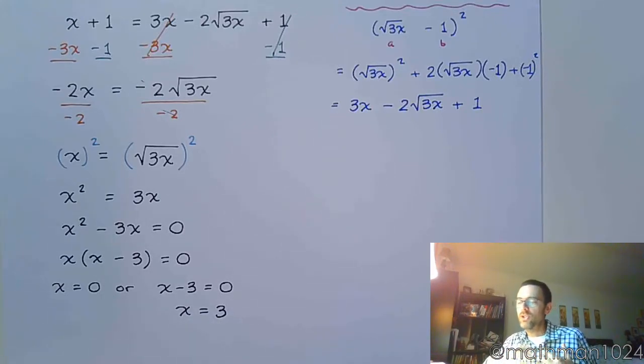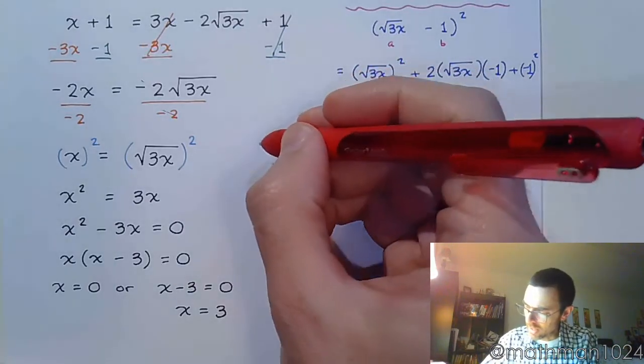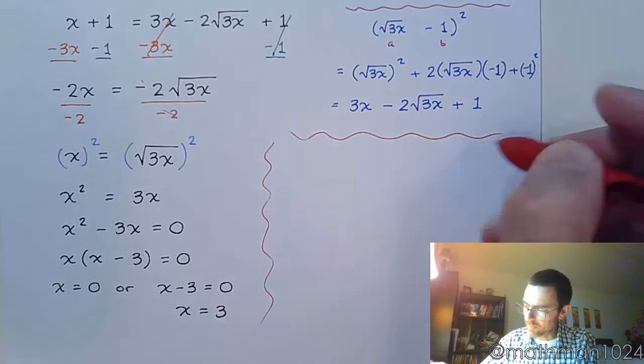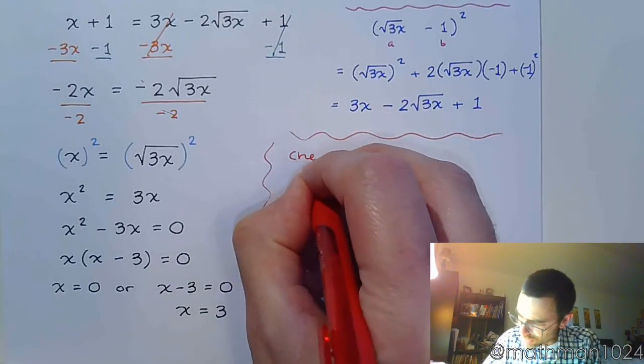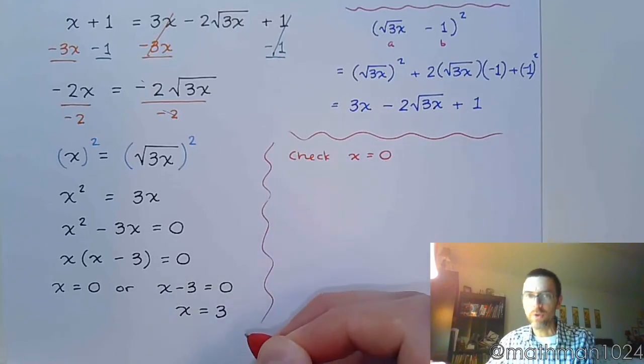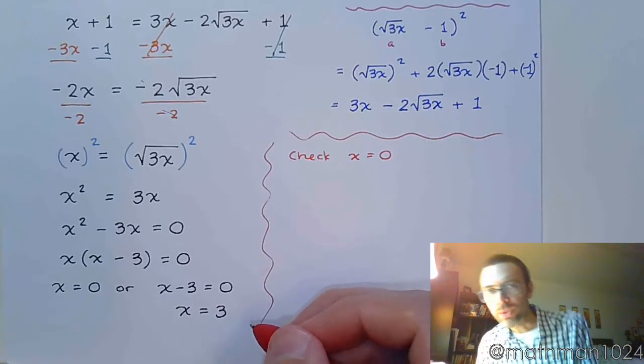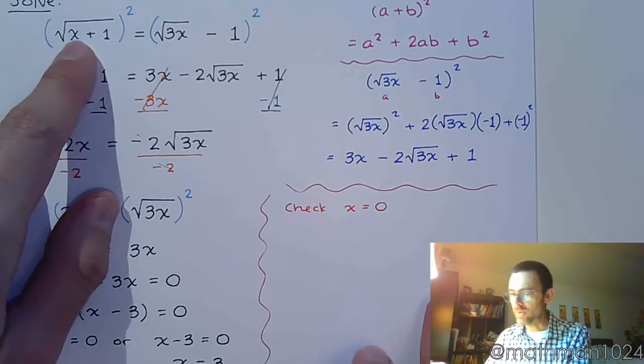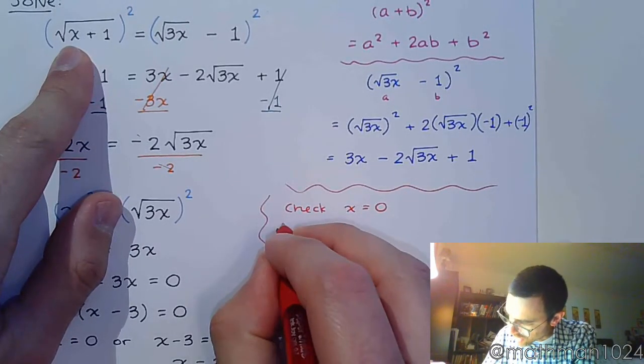But remember we can't just jump into this and circle both of these answers. We've got to check our work, so we're going to do that again off to the side. So let's start with our first solution, let's check x equals 0. And whenever you check this you always go back to the original equation.